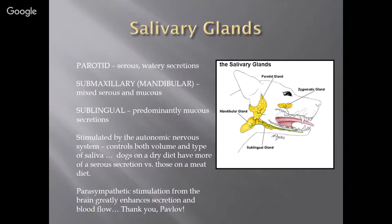The salivary glands include the parotid salivary gland, just below the ear, outside the mandibular glands. There's also a sublingual gland and a zygomatic gland, which we don't typically see during dissection. These three glands produce different types of secretions: the parotid gland has a serous watery secretion, the submaxillary or mandibular gland has a mixed serous mucus, and the sublingual is predominantly a mucus secretion. These are all stimulated by the autonomic nervous system, which controls both the volume and type of saliva. Dogs on a dry diet will actually have more of a serous or watery secretion versus those on a meat diet — the saliva changes based on what the needs are within the mouth.